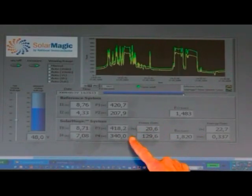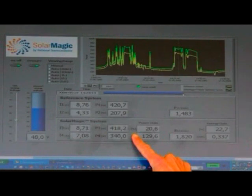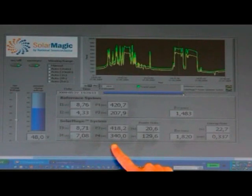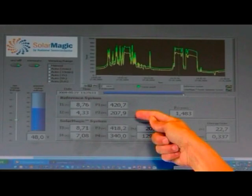With SolarMagic, with the same amount of shading, we're able to recapture a significant amount of the power lost, and you are actually seeing that we have output power of around 340 watts. That's a significant benefit over the unassisted string.